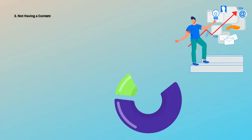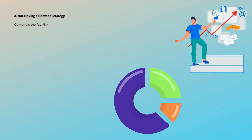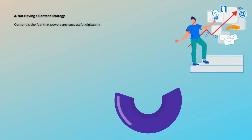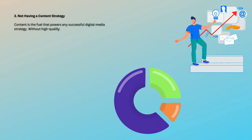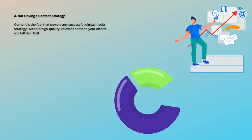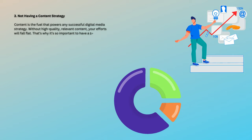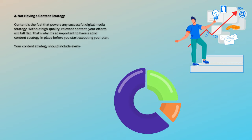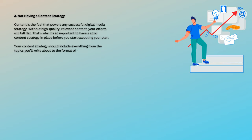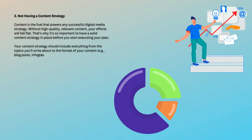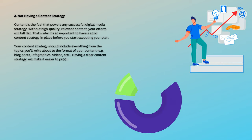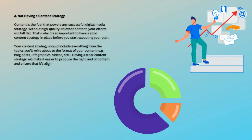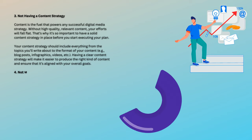3. Not Having A Content Strategy. Content is the fuel that powers any successful digital media strategy. Without high-quality, relevant content, your efforts will fall flat. That's why it's so important to have a solid content strategy in place before you start executing your plan. Your content strategy should include everything from the topics you'll write about to the format of your content — for example, blog posts, infographics, videos, etc. Having a clear content strategy will make it easier to produce the right kind of content and ensure that it's aligned with your overall goals.